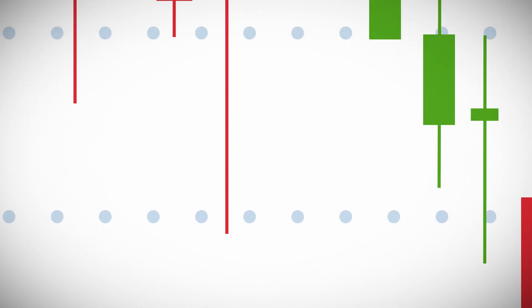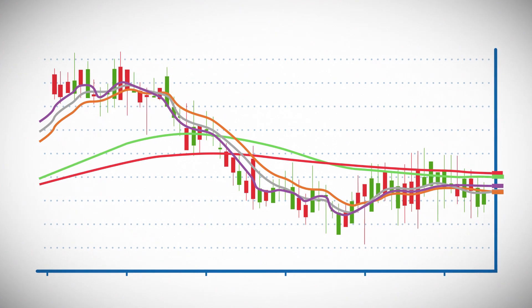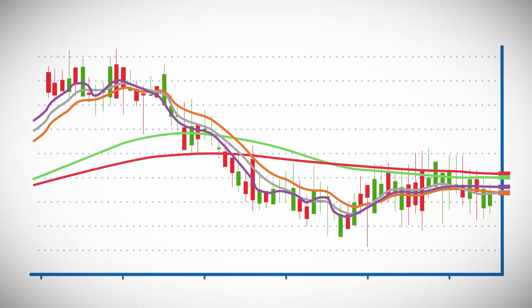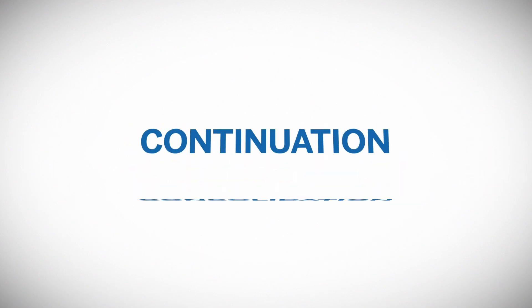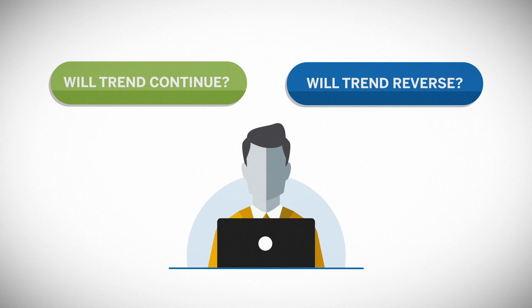Markets never move in one direction forever. Technical analysts are looking for indications that the market trend is changing by either reversing or continuing a move. Retracements, consolidation, and continuation are all possible. A trader could use patterns to determine which next direction is most probable.